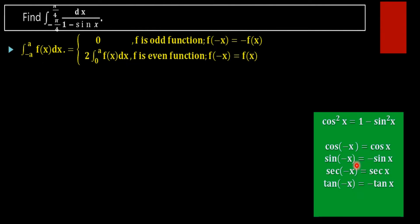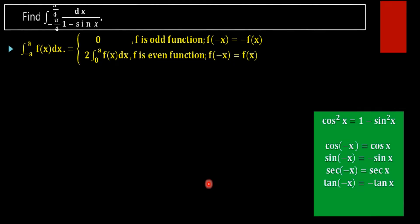For example, cos of negative x gives cos x itself, so cos x is an even function. Sin of minus x gives minus sin x, so sin x is an odd function. Similarly, sec x is an even function, and tan of minus x gives minus tan x, so tan x is an odd function.